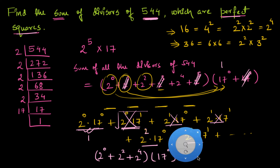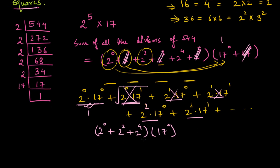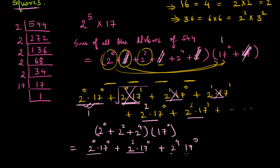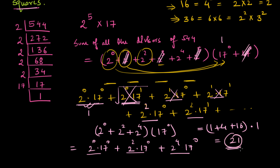Whatever terms we get after multiplying this expression, the sum of all those terms will be the perfect square factors of 544. So the value equals 2⁰ × 1 + 2² × 1 + 2⁴ × 1, which is 1 + 4 + 16 = 21. So the sum of all factors of 544 that are perfect squares is 21.